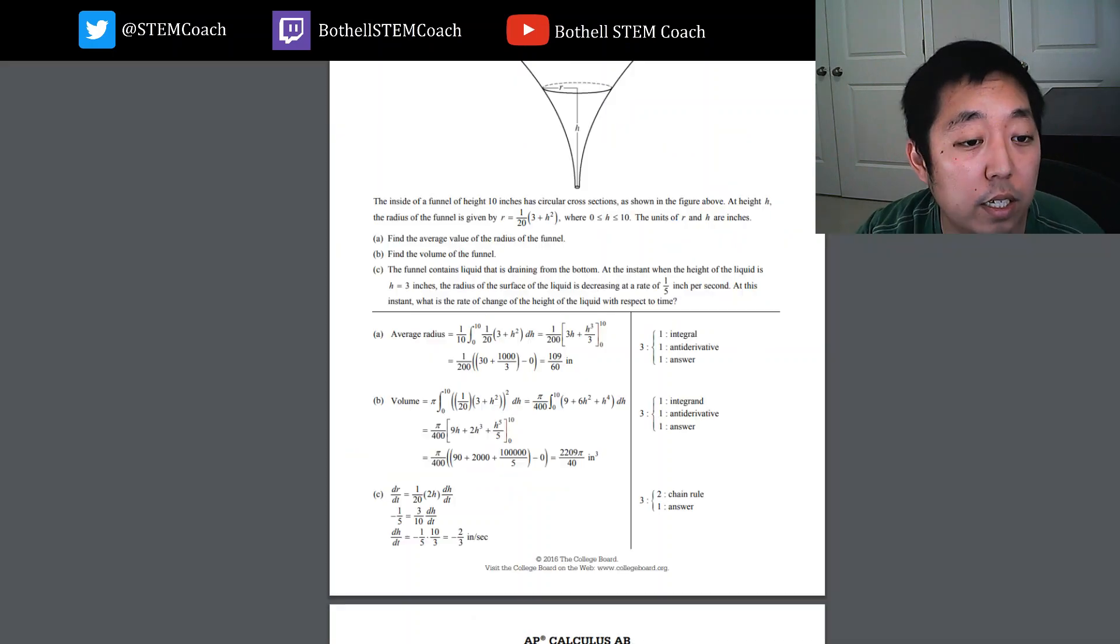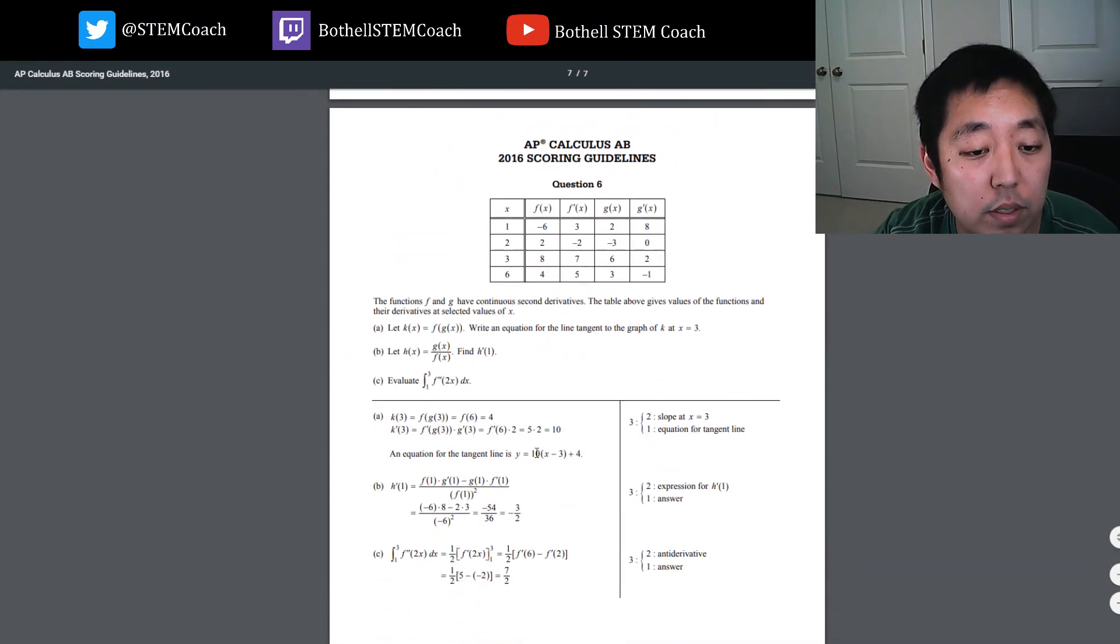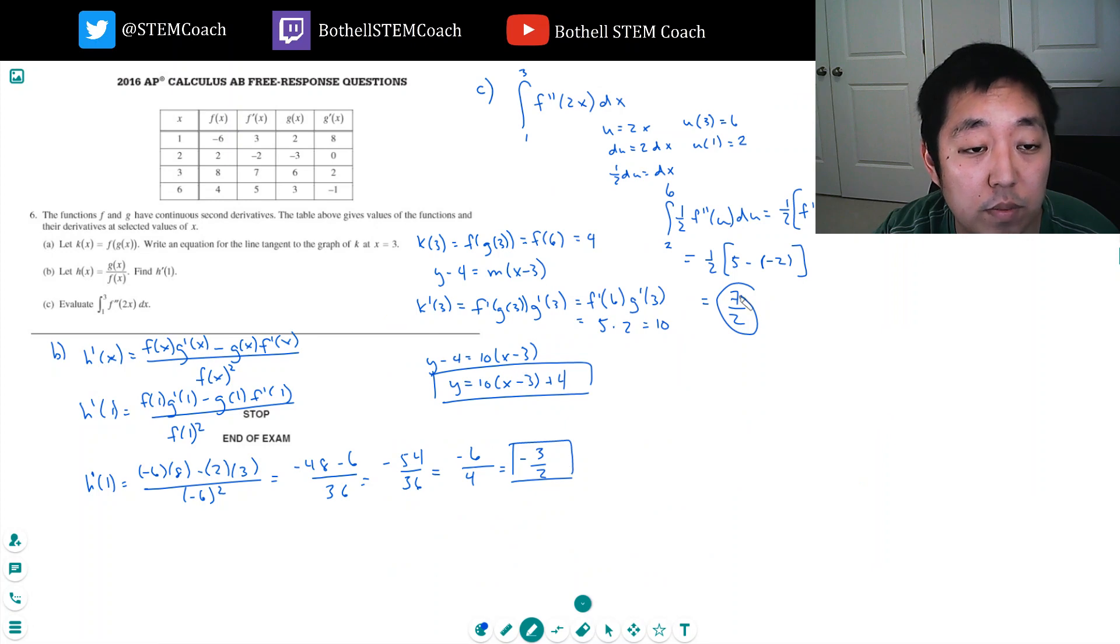All right let's take a look at if I nailed that one or not. 10x minus 3 plus 4, that's correct. Minus 3 halves and 7 halves, all right great.